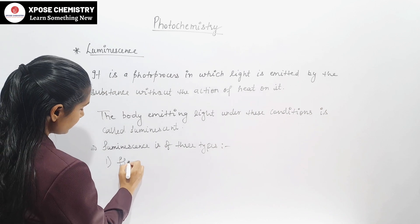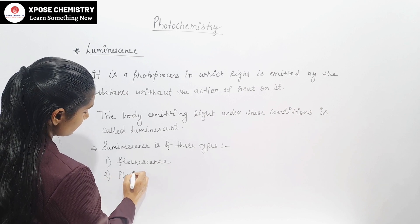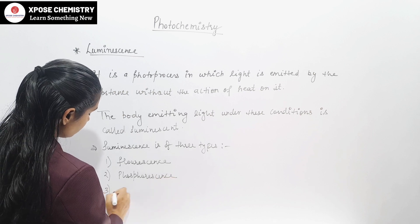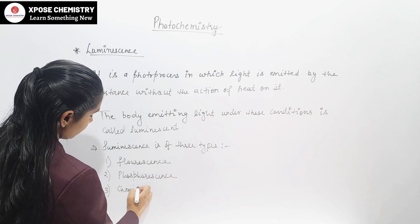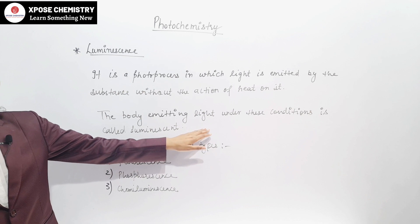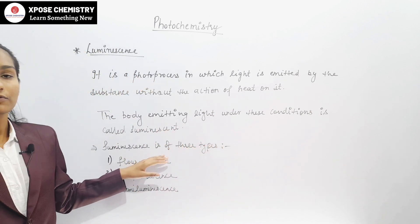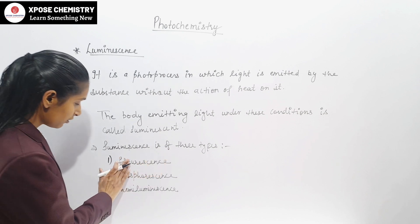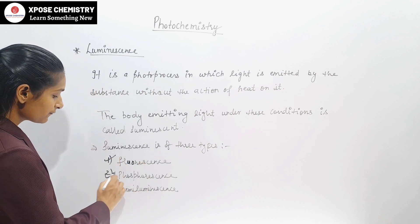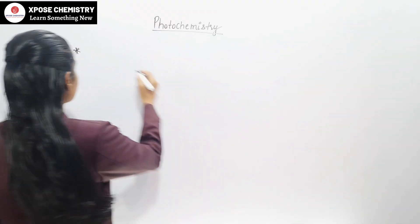The three types of luminescence are: first, fluorescence; second, phosphorescence; and third, chemiluminescence.